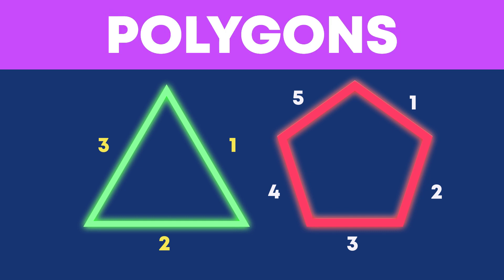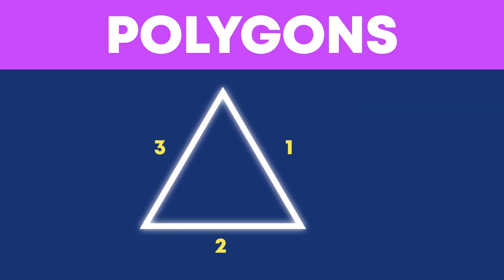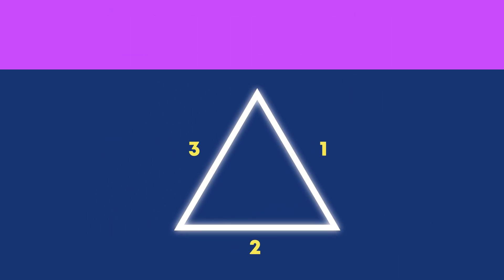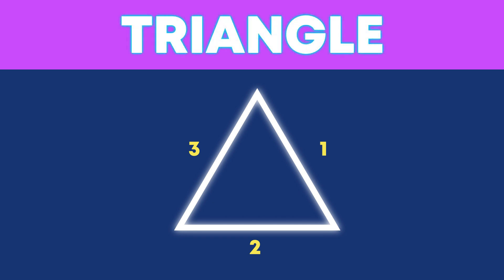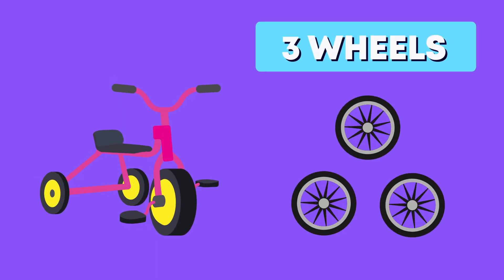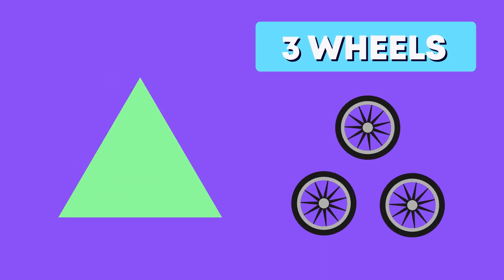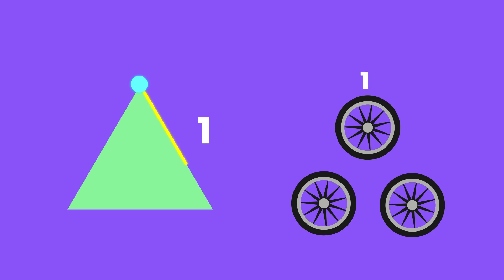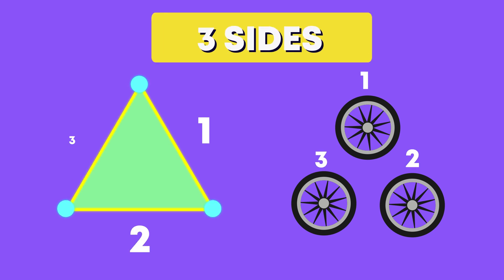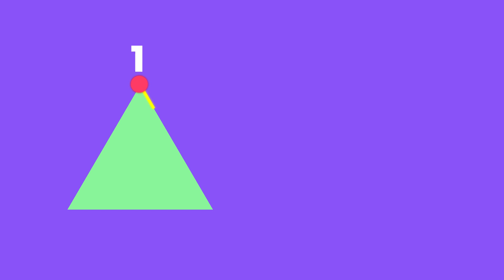Do you know what we call a 3-sided polygon? Yes, we call it a triangle. Just like a tricycle has 3 wheels, a triangle has 1, 2, 3 sides and 1, 2, 3 vertices.